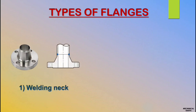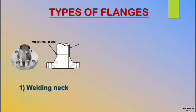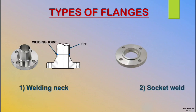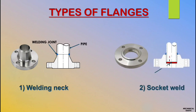First we'll see the welding neck flange. You are seeing the diagram of welding neck flange. It's a butt welding joint and pipe. Please keep in your mind — weld neck flange has a butt joint only. Next is socket weld flange. The red colour is the pipe seating area, and the pipe fits into the socket weld — that's why this flange is called socket weld flange.